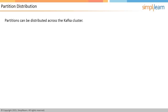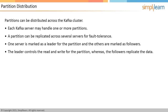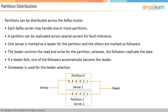Partitions can be distributed across the Kafka cluster, and each broker may handle one or more partitions. A partition can be replicated across several servers for fault tolerance. One server is marked as a leader for the partition and the others as followers. The leader controls reads and writes, whereas the followers replicate the data. If a leader fails, one of the followers automatically becomes the leader. Zookeeper is used for leader selection. In the image, partition zero is assigned to server one and partition one is assigned to server two, and these servers process messages in parallel to increase throughput.